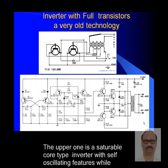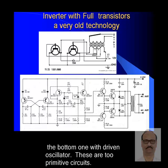Inverter with full transistors is a very old technology. The upper circuit is a saturable core type inverter with self-oscillating features, while the bottom one uses a driven oscillator. These are two primitive circuits illustrating older technology — not much electronics, just power transistors and a transformer with a saturable core to produce AC output. Both designs are completely obsolete and no longer used in the market.